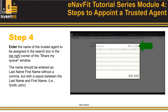Step 4. Enter the name of the trusted agent to be assigned in the search box in the top right corner of the Share My Queue window. The name should be entered as last name, first name, without a comma, but with a space between the last name and first name. For example, Smith space John.